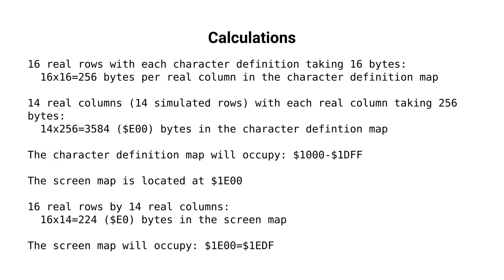So the code could go after that at 1EE0. I think it might be possible to extend this to a 16×15 text mode by overlapping the screen map and character map, but I haven't experimented with this yet. If I manage it, I'll publish the details at a later date.